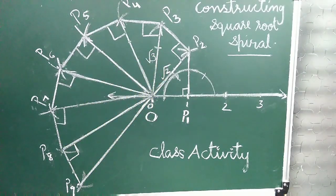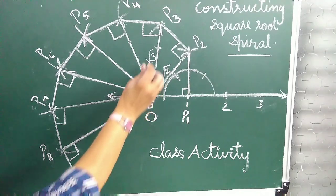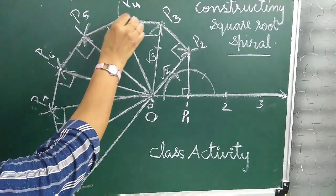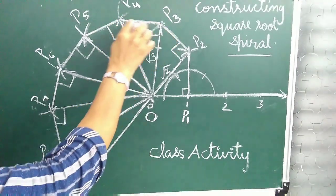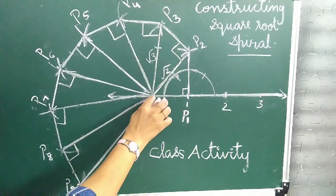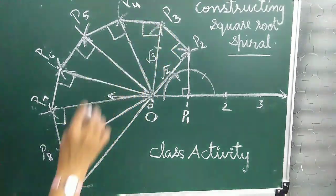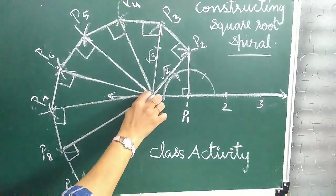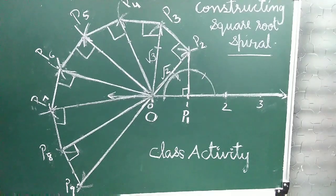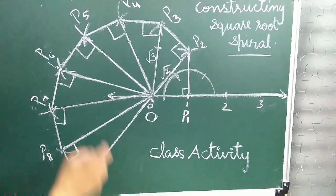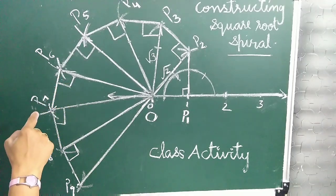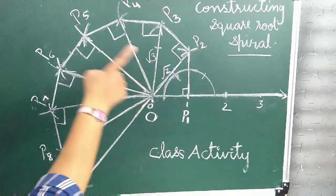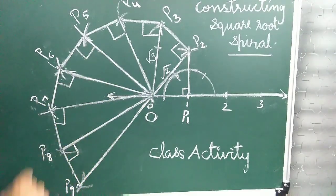Again we draw a line segment P3P4 of unit length perpendicular to OP3 and join OP4. Continuing in this manner, we can draw a beautiful square root spiral.